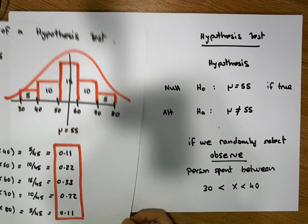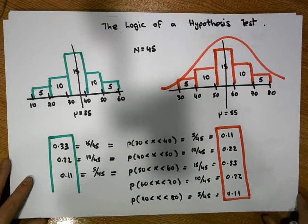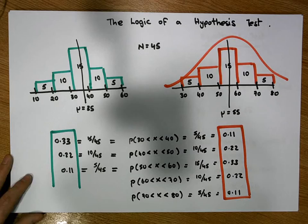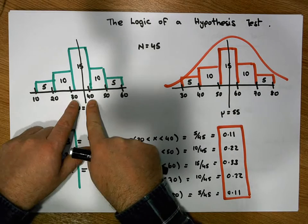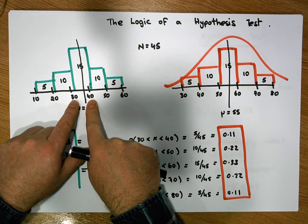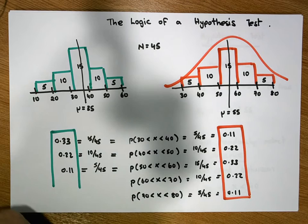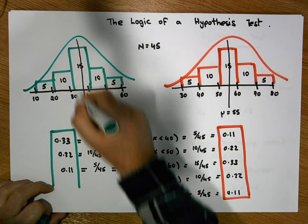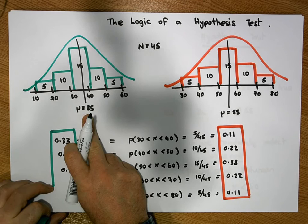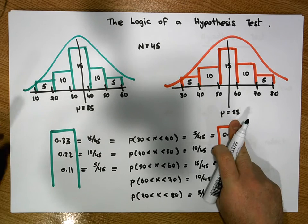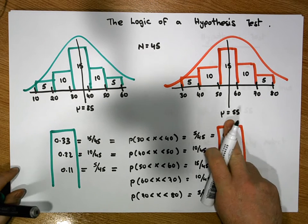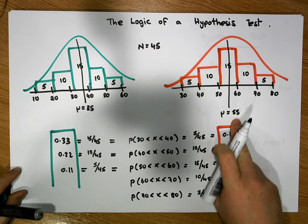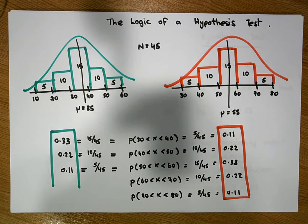Whereas on the other hand, if I do randomly select from the population and I find someone between 30 and 40, I more than likely have, we more than likely have a distribution that's centered on 45, which is evidence to suggest that our hypothesis that the distribution was centered on 55 is actually incorrect.